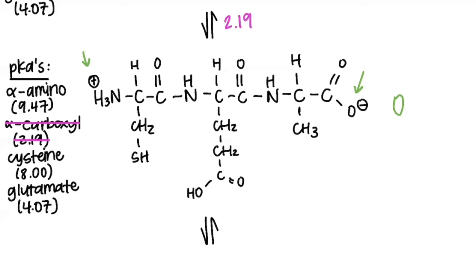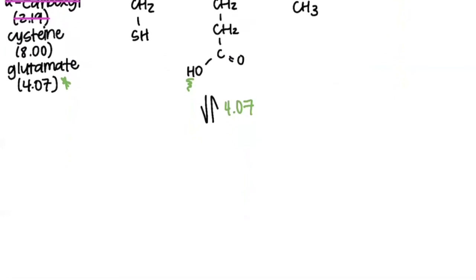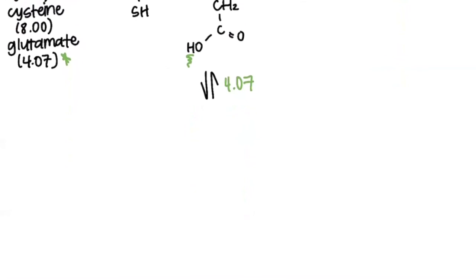And now we look on our list for the next lowest one, which is glutamate. So once we pass the pH of 4.07, the glutamate side chain will get deprotonated right there. So I'm going to scroll down again and rewrite the tripeptide now with the glutamate deprotonated.